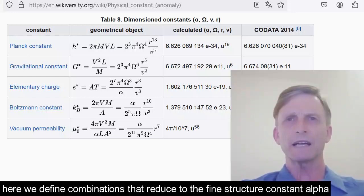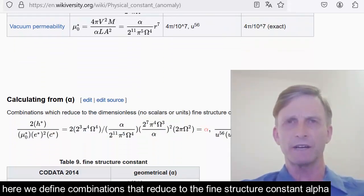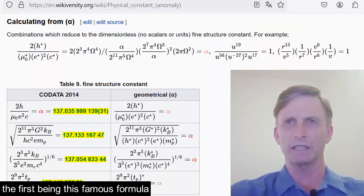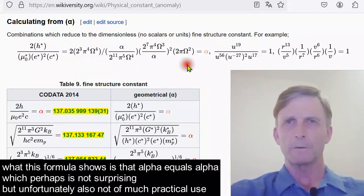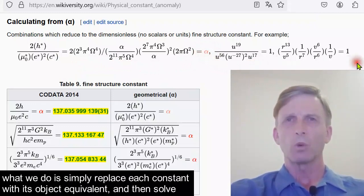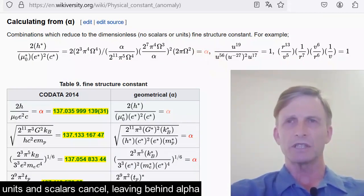Here we define combinations that reduce to the fine structure constant alpha. The first being this famous formula. What this formula shows is that alpha equals alpha, which is perhaps not surprising but unfortunately also not of much practical use. What we do is simply replace each constant with its object equivalent and then solve. Units and scalars cancel, leaving behind alpha.